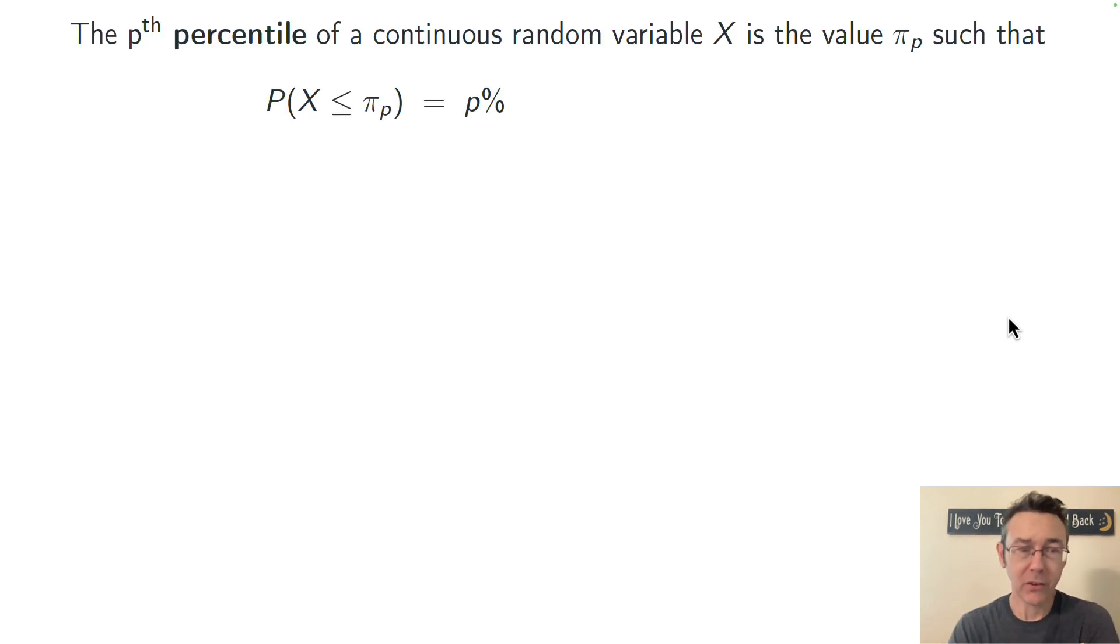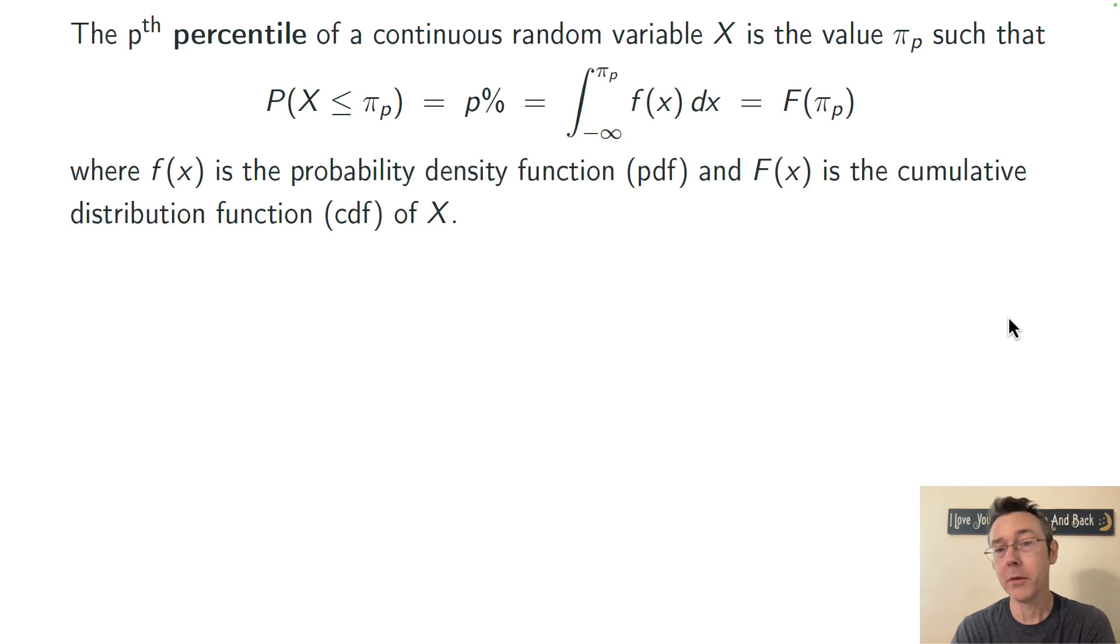A bit more specifically, the pth percentile of a continuous random variable X is just the value with p percent of the probability below that value. So if big F is the cumulative distribution function, then the pth percentile, call it π_p, is the value such that big F of π_p is p percent.